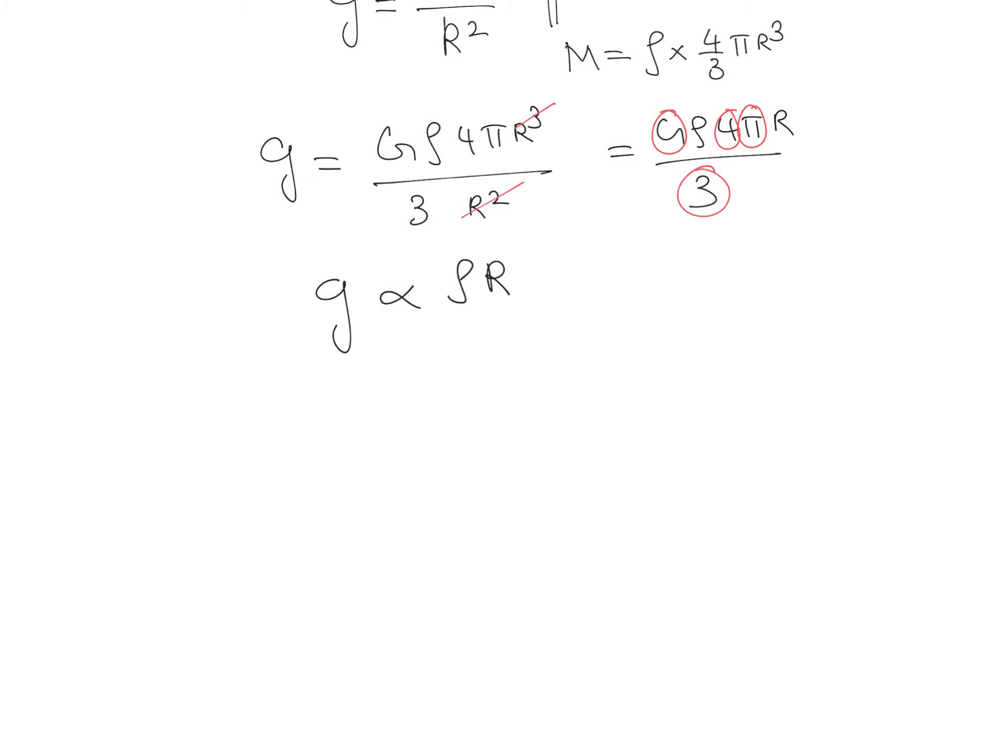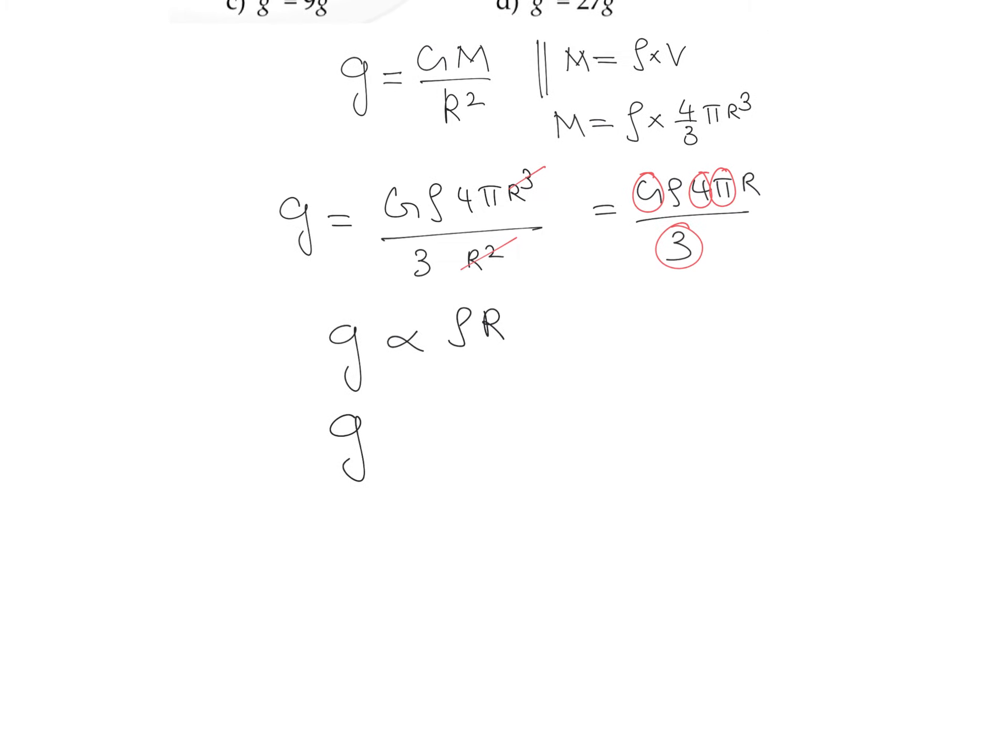We need to write it only in terms of variables. So g is directly proportional to rho into R, that means we can write the value of g dash divided by g equals density dash divided by rho into R dash divided by R.